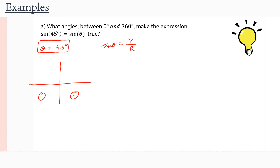We'll draw our initial arm, a terminal arm in quadrant one, and a terminal arm in quadrant two. We have θ₁ and θ₂. In the first quadrant, there's no separate related acute angle because the principal angle itself is already acute. And as we can notice from the question, 45° is our first θ value. So θ₁ = 45°. Sine of 45° equals sine of 45° — that's intuitive.